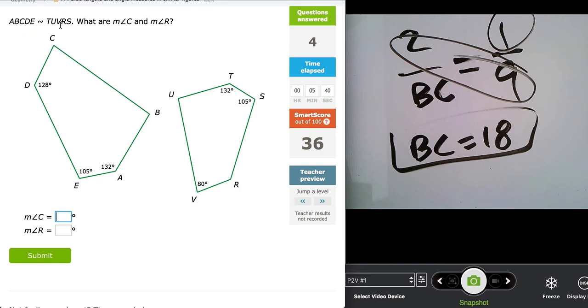Therefore, it corresponds with this V, which is the third letter. So C is the same as V. And if V is 80, then C has to be 80 degrees as well. Now we're looking for R as well. R is the fourth letter in this shape here. Therefore, we look at the fourth letter here, which is D. Therefore, D being 128 degrees is the same as R. So for R, we are typing 128 degrees. Just find those corresponding parts.